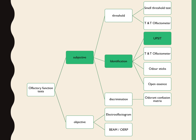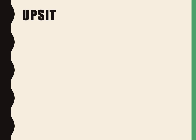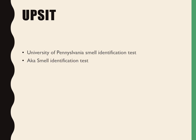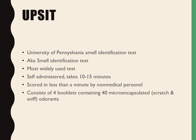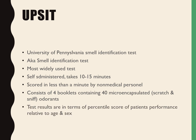The next test is the UPSIT, which is a subjective type of identification test — the University of Pennsylvania Smell Identification Test, also known as the Smell Identification Test. It is the most widely used test, can be self-administered, and takes 10 to 15 minutes. It can be scored in less than a minute by non-medical personnel and consists of four booklets containing 40 micro-encapsulated scratch-and-sniff odorants.